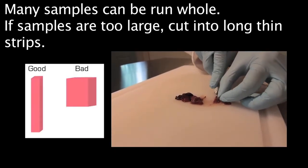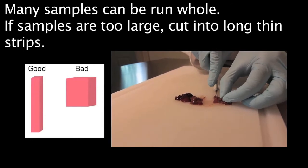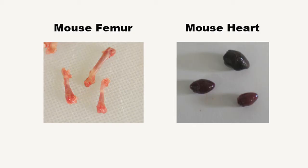This shape will homogenize more efficiently than cube-shaped or square samples. Today we're going to homogenize mouse femur and mouse heart, both of which can be homogenized whole.